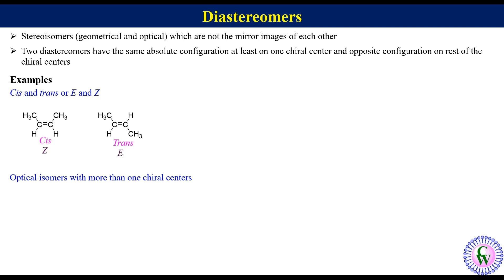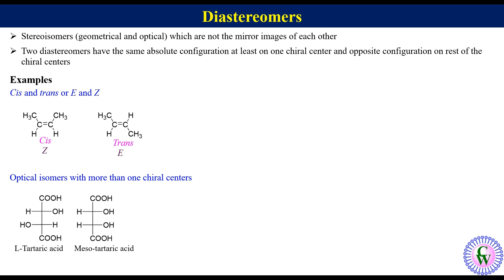The first example of this type is the pair of L-tartaric acid and meso-tartaric acid. Here we can see that these are optical isomers but not mirror images of each other, so these are diastereomers. We can also find the relation by assigning and comparing the absolute configuration of each chiral center.